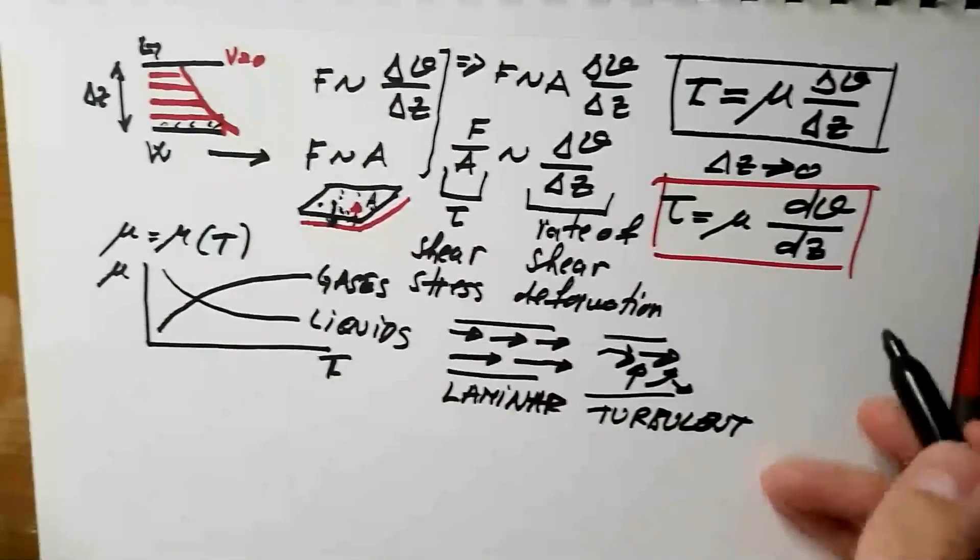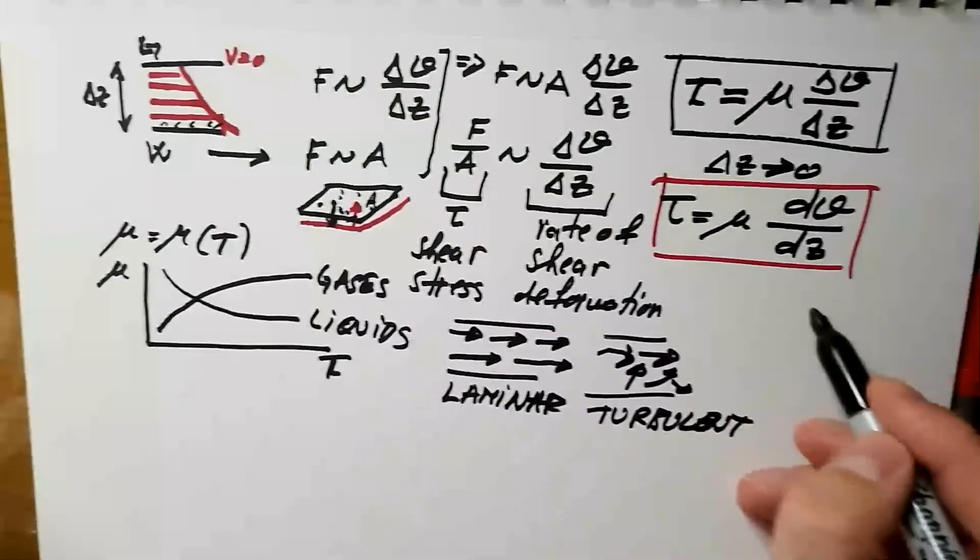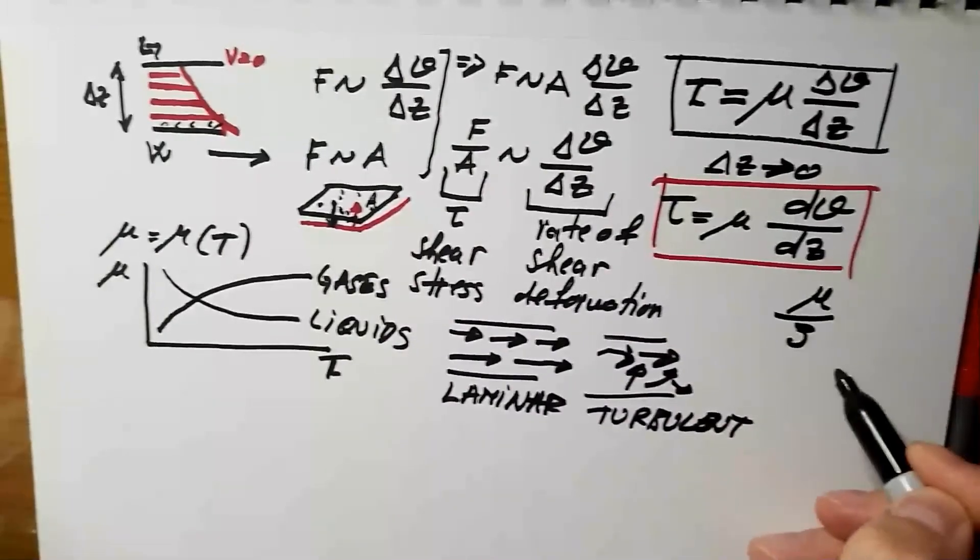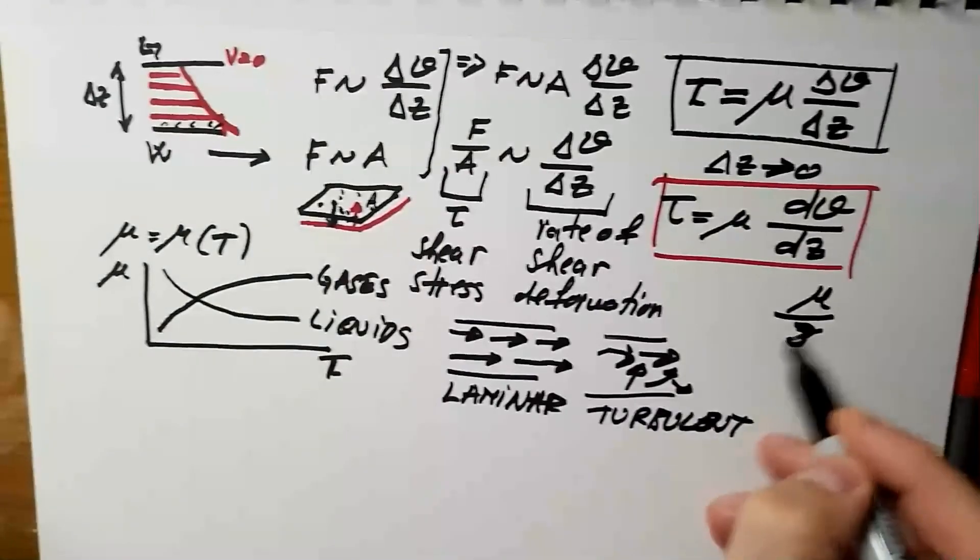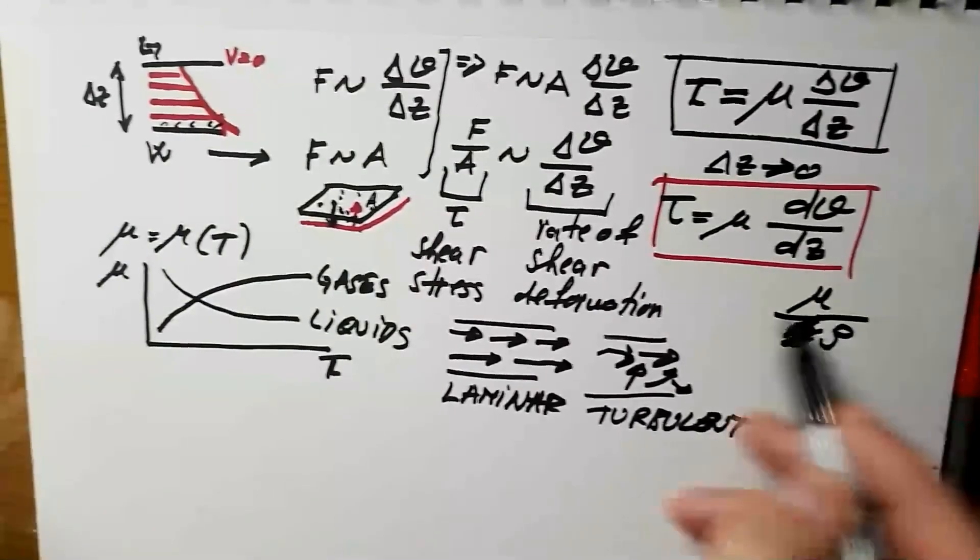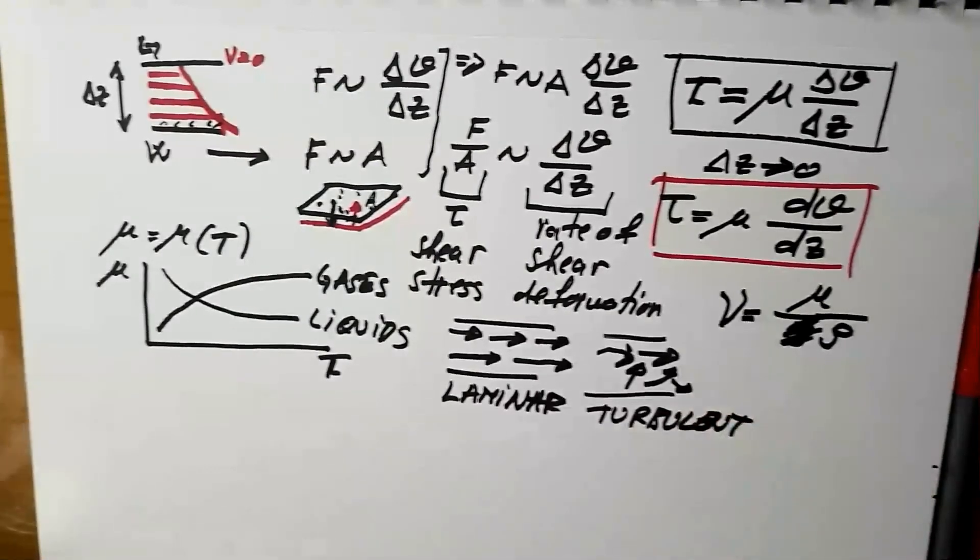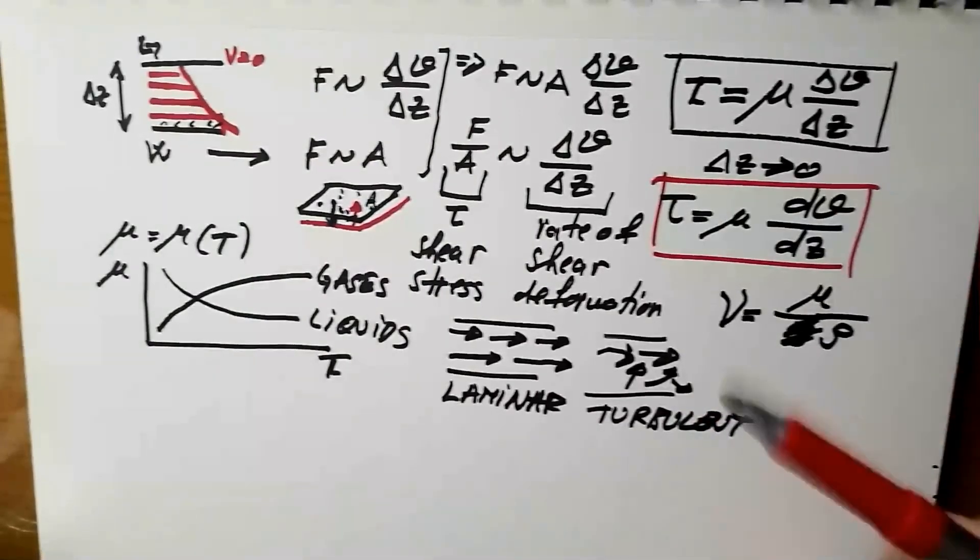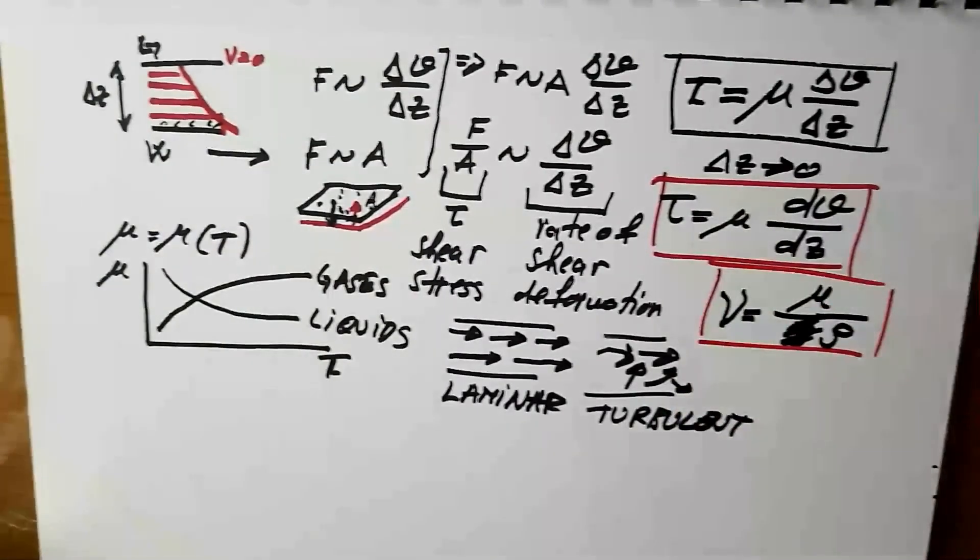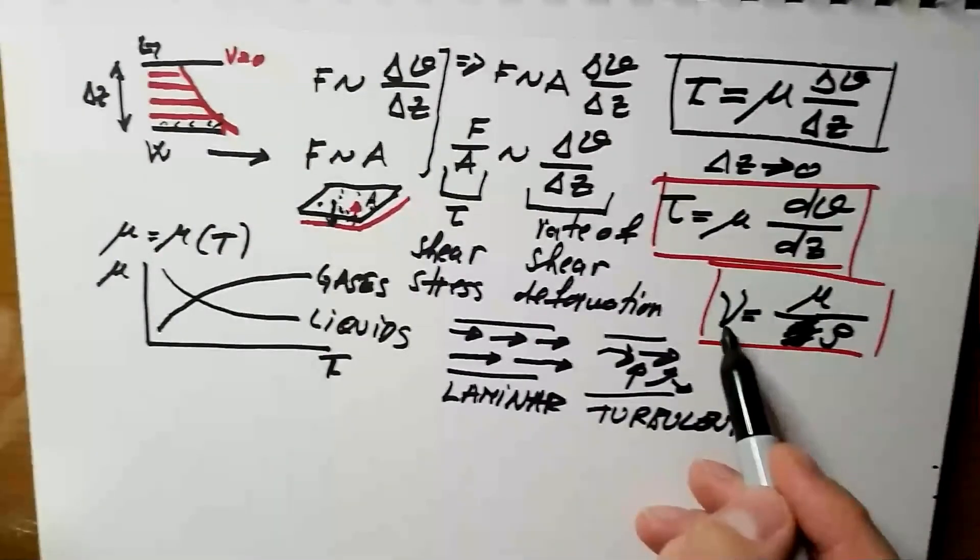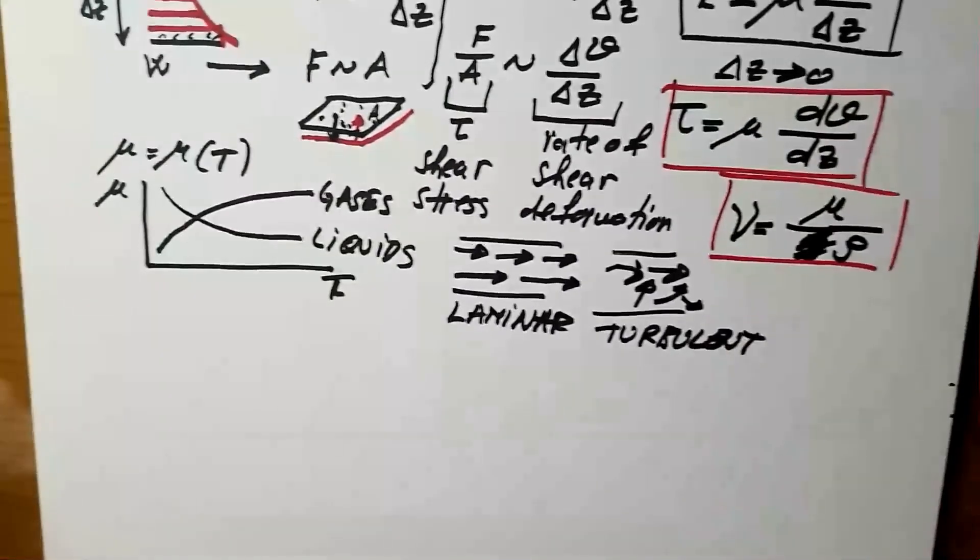Sometimes we also like to relate viscosity to density of the fluid, and then we divide mu with rho, where rho is density of the fluid, and this is called nu, or kinematic coefficient of viscosity. And in atmospheric sciences, we usually work rather with nu than mu.